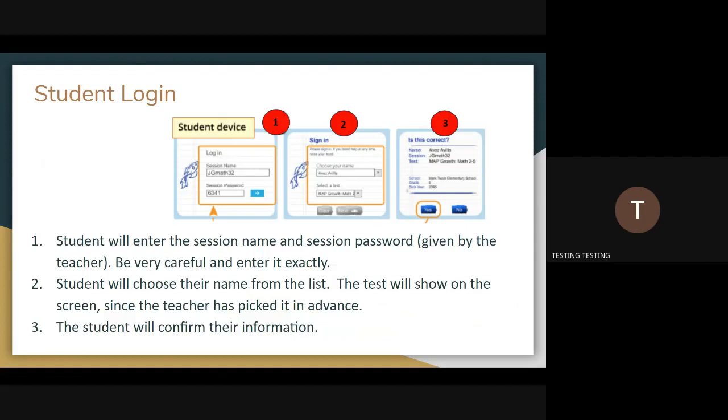The third screen is the confirmation screen for the student. The student will be asked to confirm their information on the screen. If the student has accidentally picked the wrong name, they would click no which will take them back to the initial login page and they will start the login process over.